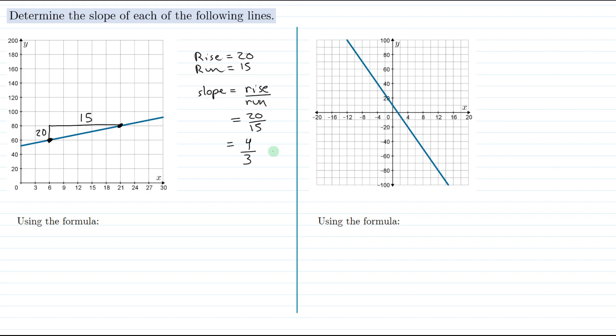We could write this as a decimal, but 4 divided by 3 is 1.3333 and so on, which is not the nicest decimal, so we'll just leave it as a fraction.